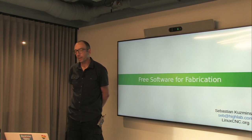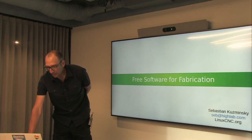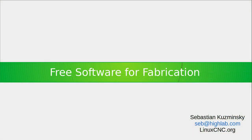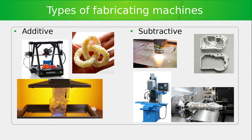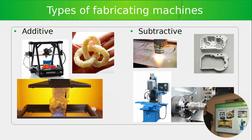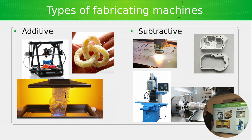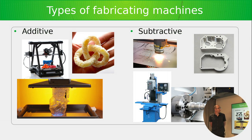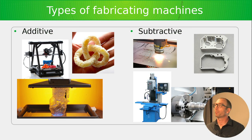I can give an overview of some options for each layer of the stack in free software — though I should preface this: I'm not an expert at the top two layers, I'm merely an interested amateur. We divide fabrication machines roughly into two kinds: additive and subtractive. 3D printers are additive machines that build a part up out of nothing by adding material. Subtractive starts with a larger piece of raw material and removes everything that is not the part you want.